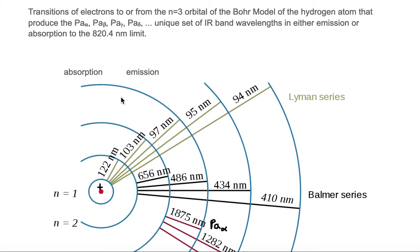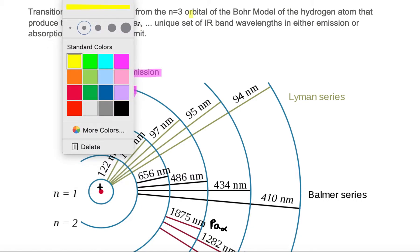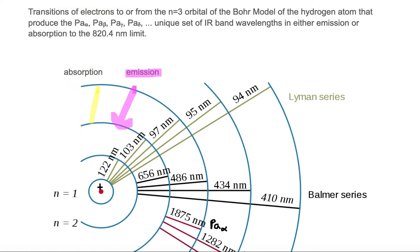If an electron were to make a transition downward, then that electron would emit a photon, and we call that emission. If, on the other hand, an electron were to make a transition upward from one orbital to the next, then that electron would need to absorb a photon to move upwards.